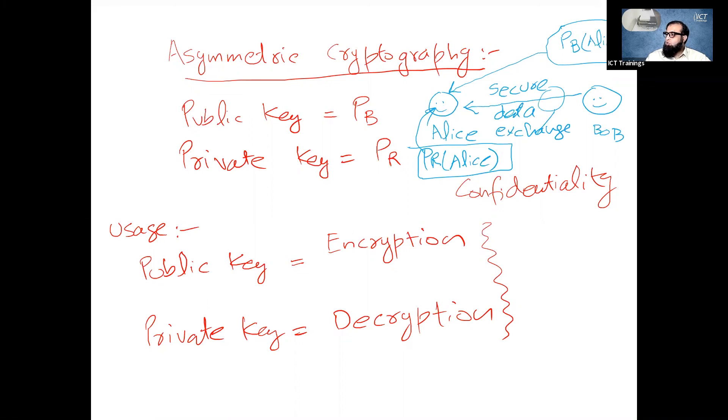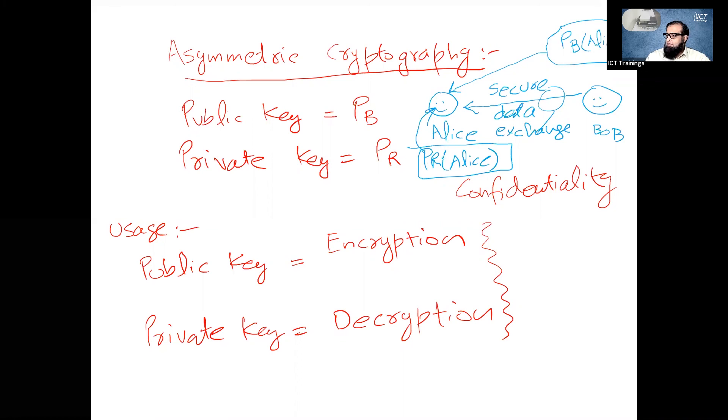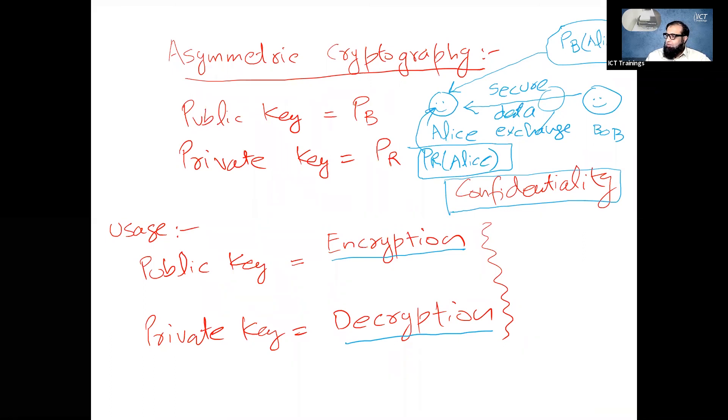Can see this information, can decrypt this information assuming the fact that Alice has got its private key and it was not shared with anyone and it is not compromised, assuming that. Lehaza public key se encryption ki gayi aur private key ke saath decryption ki gayi. Yeh humein deti hai sense of confidentiality. Yeh humein sense of secure data exchange deti hai yeh jo usage humne discuss ki hai.